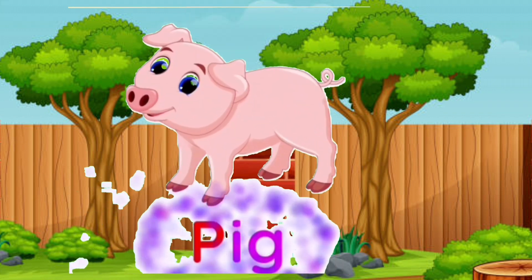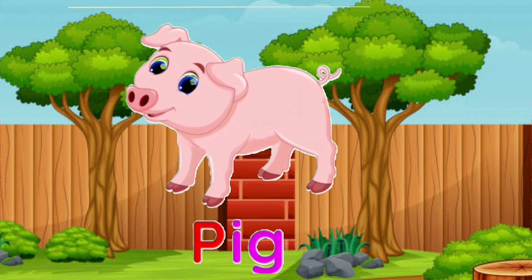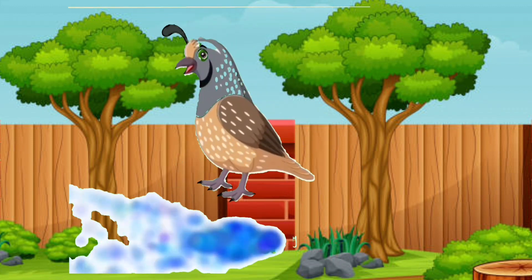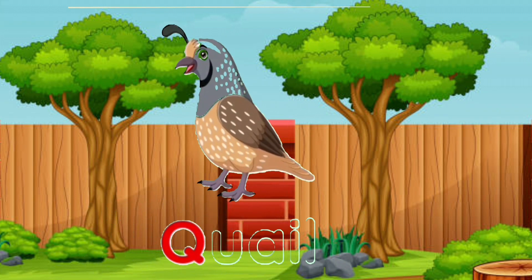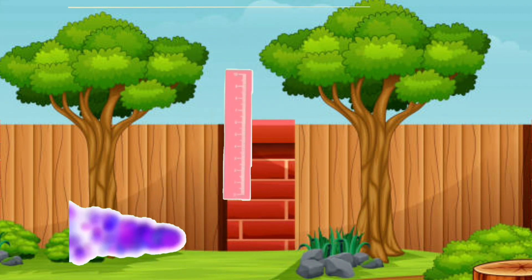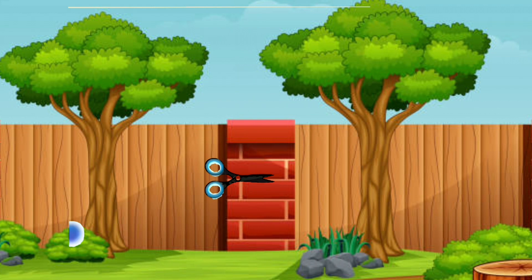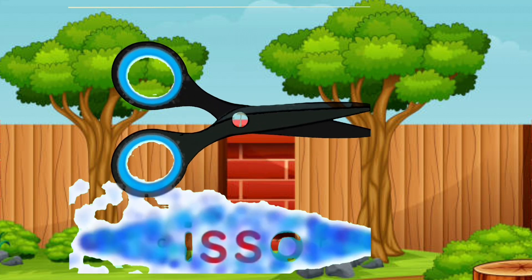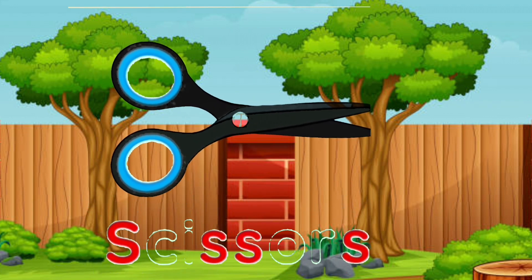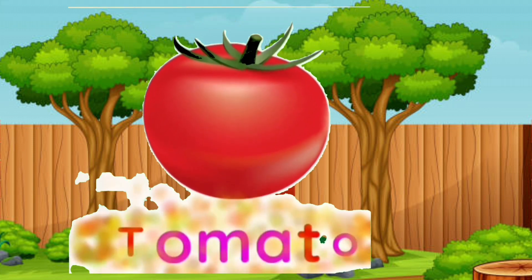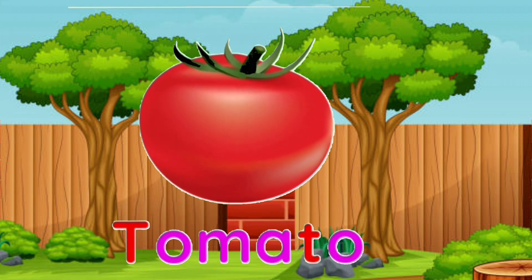P is for pig, Q is for quail, R is for ruler, S is for scissor, T is for tomato.